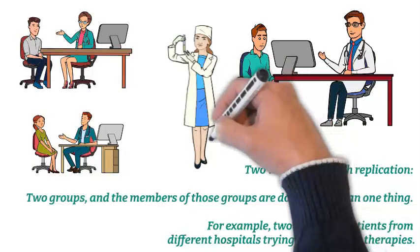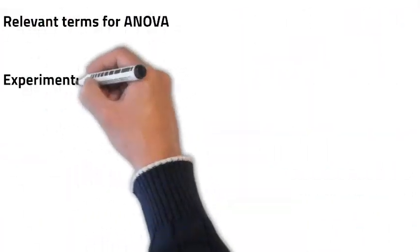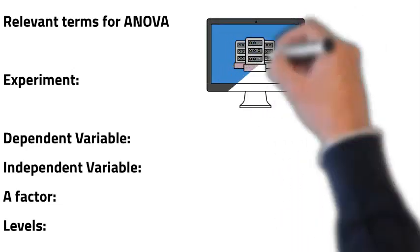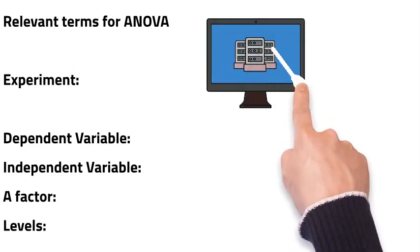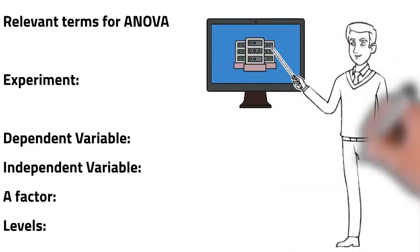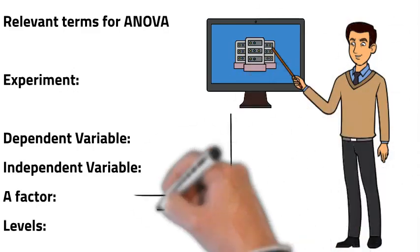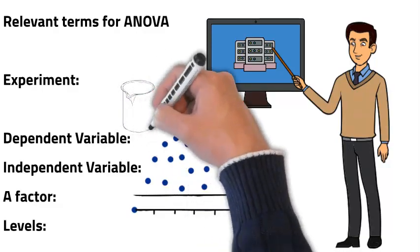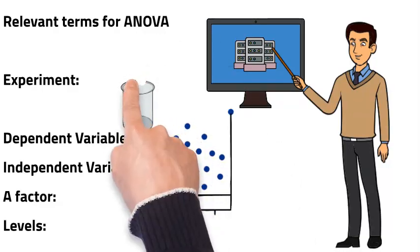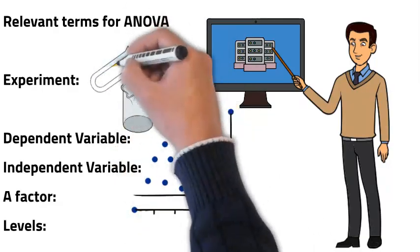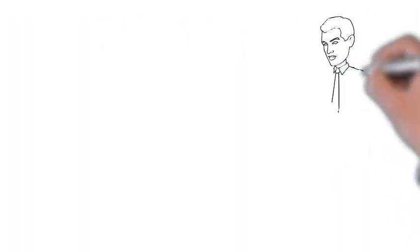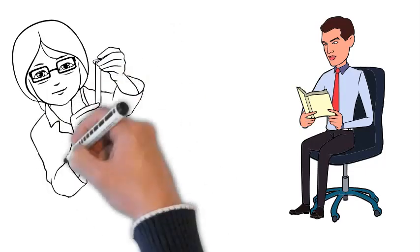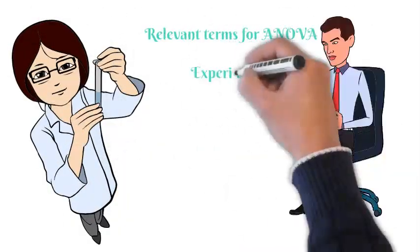That was a short introduction to ANOVA. There are also relevant terms to know. An experiment is a study or investigation designed to examine the effect that one variable has on the values of another variable. A dependent variable is the variable for which a value is measured or observed. In ANOVA, the dependent variable will be a quantitative variable — for example, soft drink consumption, examination score, or the time required to type a document.